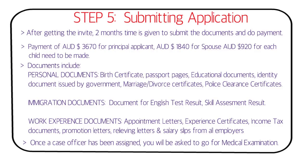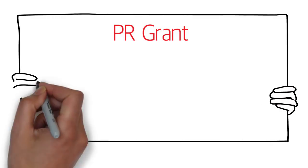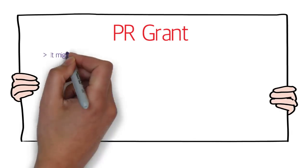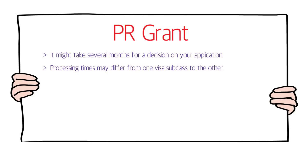Those were the five complete steps for planning your PR application to Australia. Regarding PR grant: after submitting the application, it may take several months for a decision, generally varying by visa subclass — roughly four to seven months.